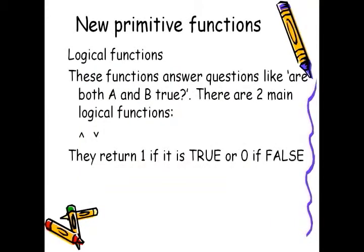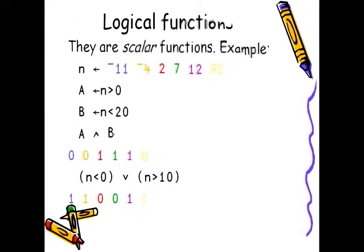Logical functions answer questions like, are both A and B true? There are two main logical functions. They return 1 if it is true, or 0 if it is false. Just like the relational functions, they are all scalar functions.